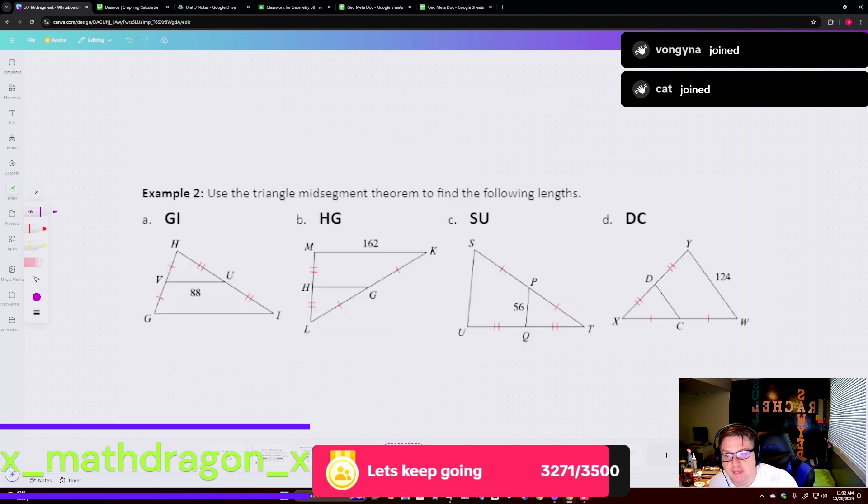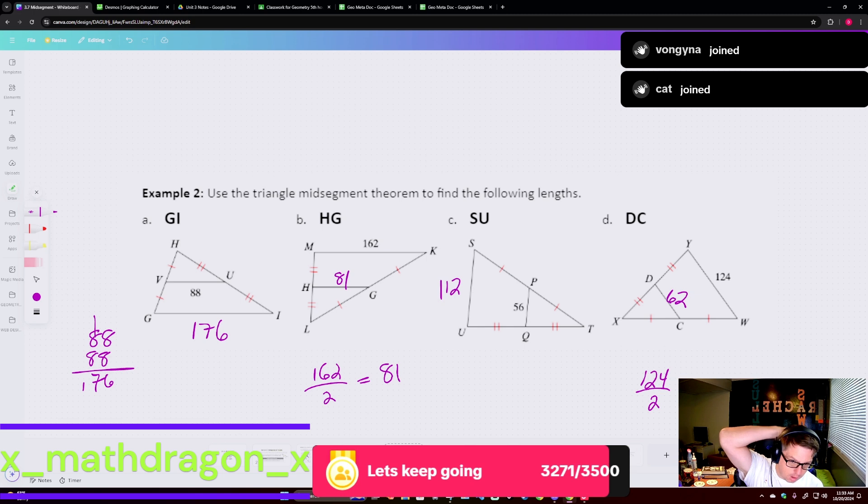But when you're looking at just this, like use the triangle midsegment theorem to find the following lengths. If this is 88, double it. So 176. If this is 162, divided by 2, 81. If this is 56, double it, 112. And then this is 124, divided by 2, 62. So you can quickly get from one to the other by doubling or cutting it in half. It's up to you, whatever you feel more comfortable with. But that's the relationship between the midsegment and the base side that's directly across. And we know all of these are parallel lines.